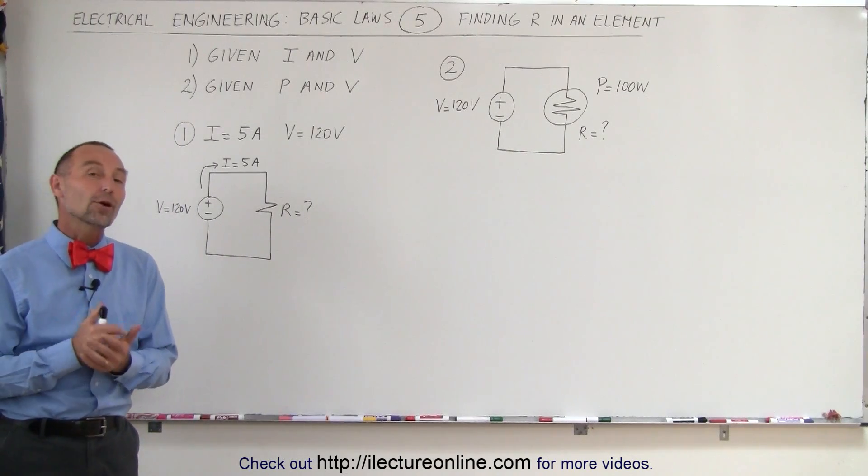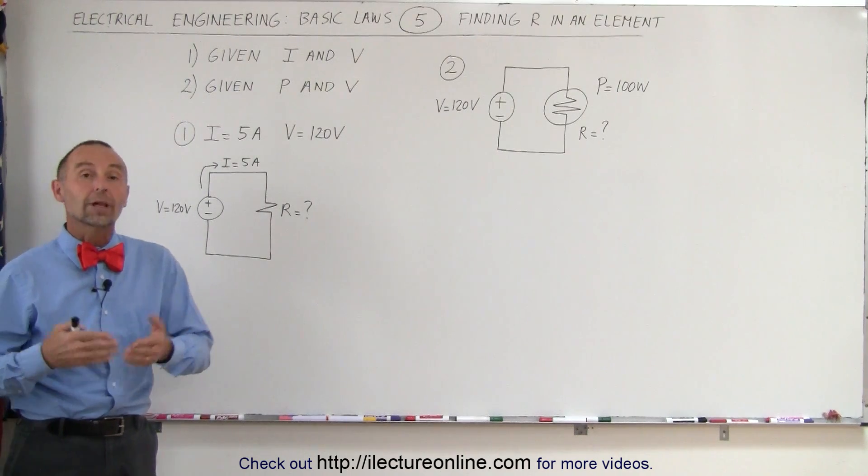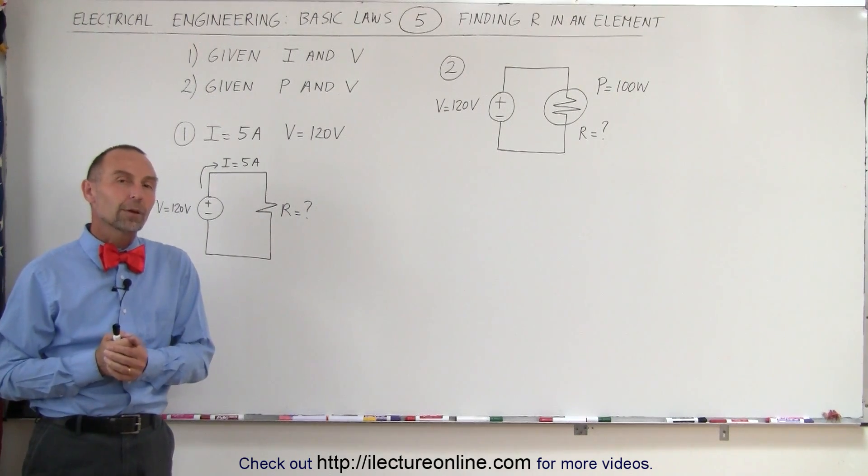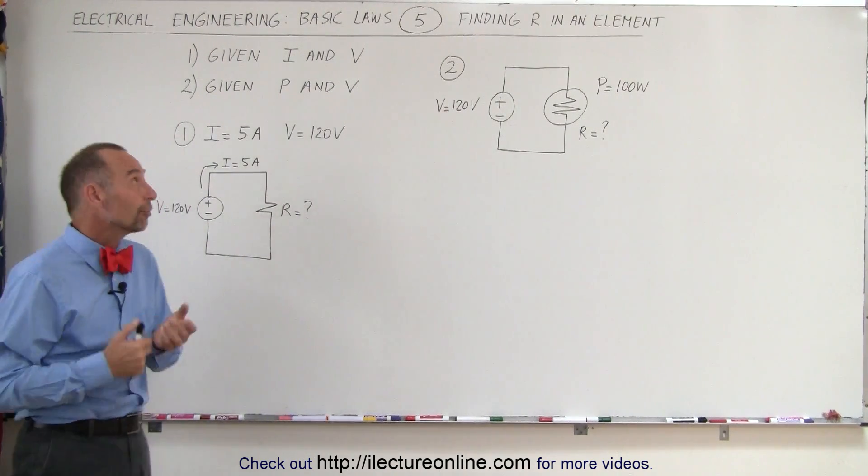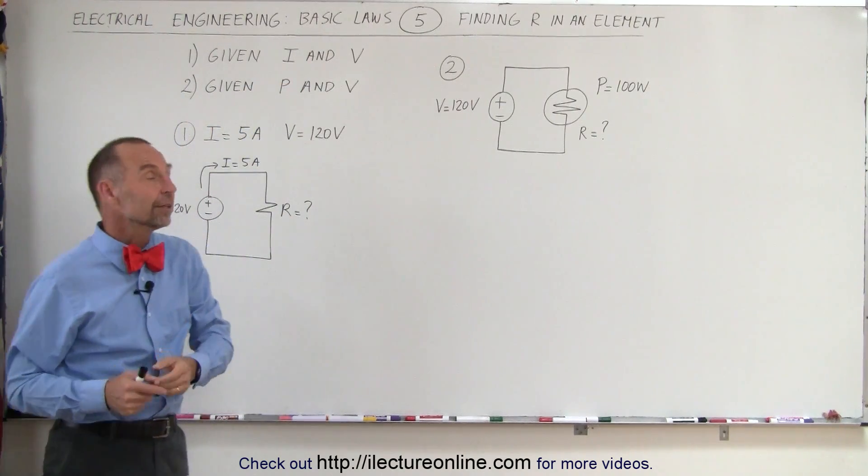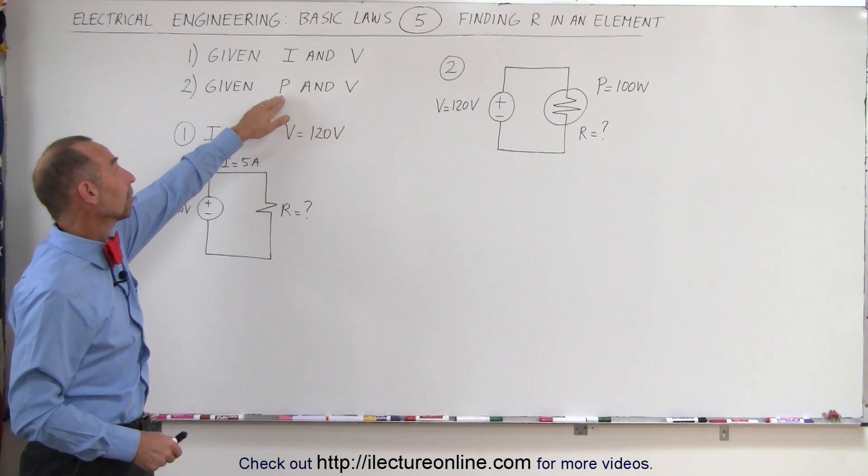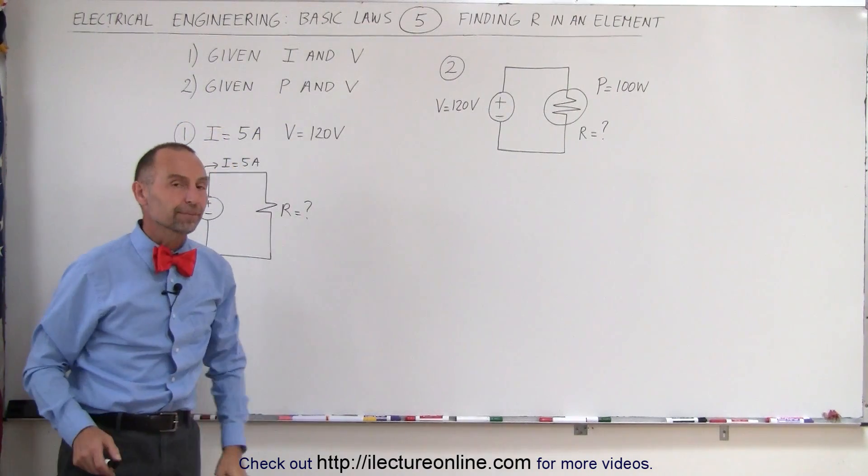Welcome to Electronline. In this video we're going to find the resistance of an element, such as a resistor or a light bulb, but we're going to do it in two ways. The first way is when both the current and the voltage in the circuit are given. The second method is going to use the power and the voltage.